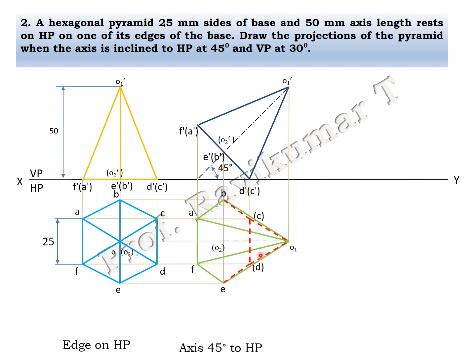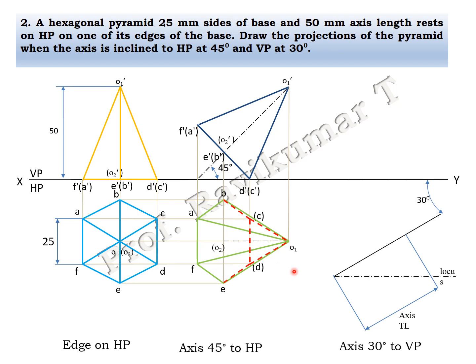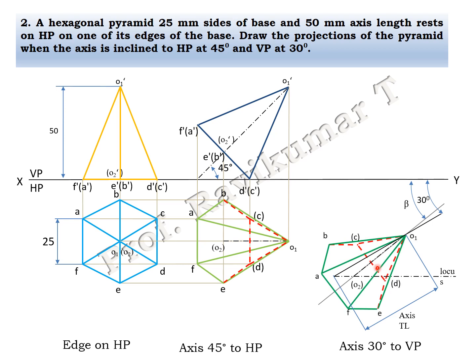The final position: axis 30 degrees to VP. Since it is a locus problem, use apparent length rather than true length. From the first position you get the true length, from the second position you get the apparent length. The distance O to O1 — this is the true length and this is the apparent length. Take the true length, draw a locus line, then take the apparent length from the same point and cut an arc on the locus line. Extend to the XY line to find beta. Then take O to O1 and place it on the inclination with VP. Do the naming.